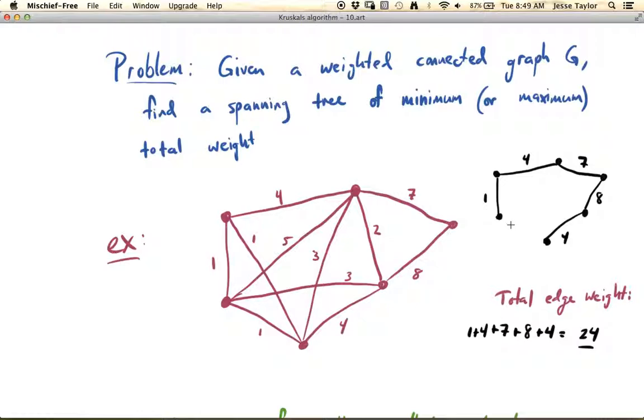Now, is this the minimum possible total weight? Or is it the maximum possible total weight? And it turns out in this case it's neither, but we want to know, what's a systematic approach so that we can find the minimum weight spanning tree or a maximum weight spanning tree?